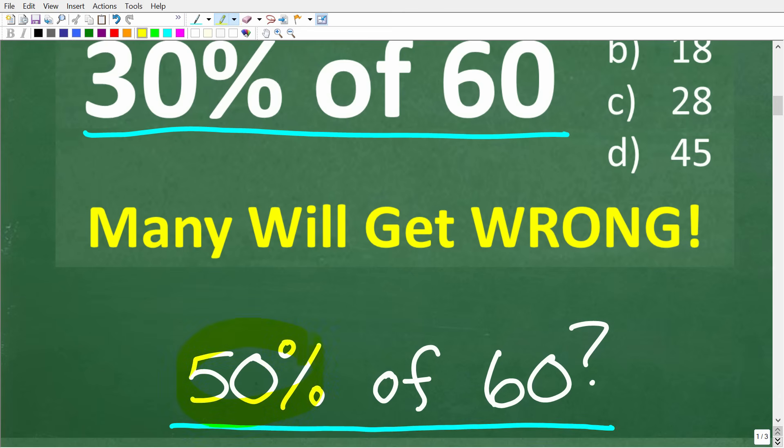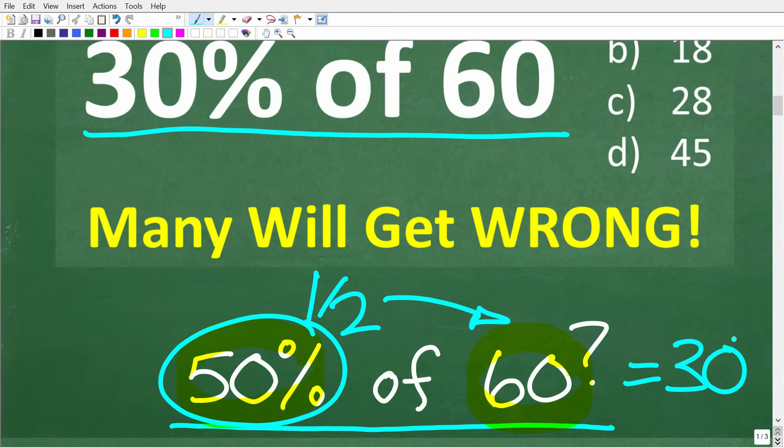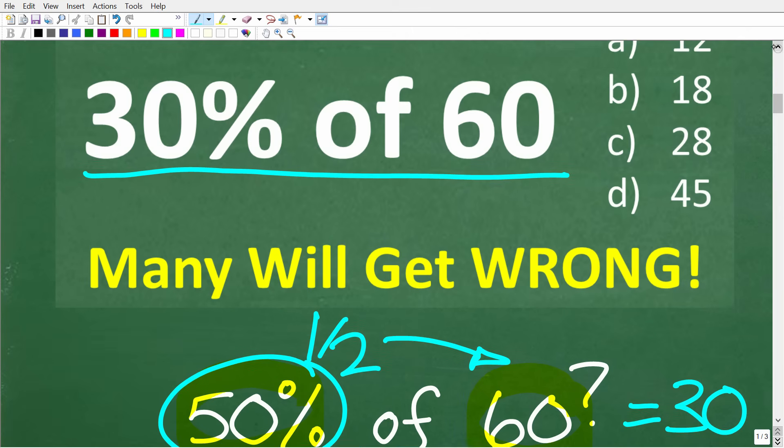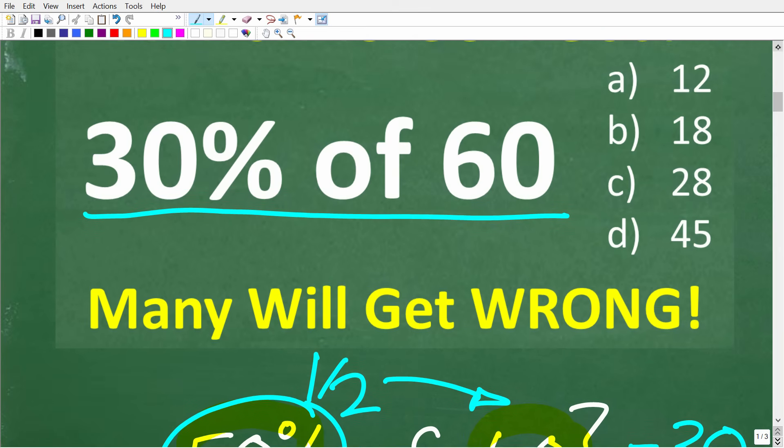So the question again is 30% of 60. So what could we do here? Well, maybe one thing you could do is think about what is 50% of 60. All right, so 50% of 60. Now you don't need to be great at math to basically figure out the answer here. 50% is what? Well, that means one half. So if I asked you, what is one half of 60? Hopefully you could say, well, it is 30. And that would be correct. So 50% of 60 is 30.